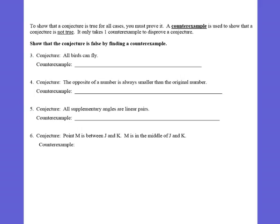If we ever want to show that a conjecture is wrong, if someone makes a claim and you want to prove them wrong, that's called a counterexample. Counterexamples are used to show that a conjecture is not true, and all it ever takes is one counterexample to disprove a conjecture.